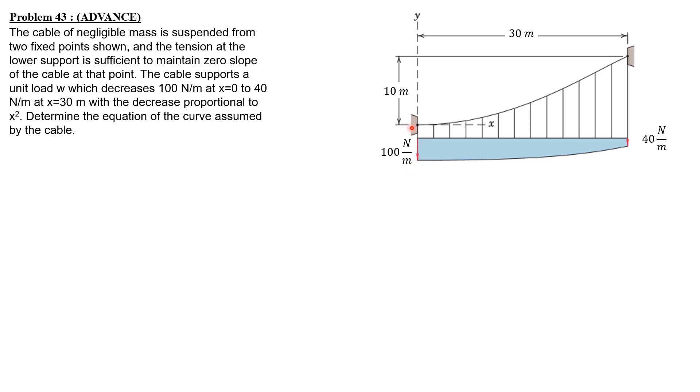The requirement is to derive or determine the equation of this curve if the loading varies from 100 to 40 N per meter at the right end, and it is assumed that the decrease is proportional to x squared. Therefore, this portion is a spandrel of parabola, and we treat it as a rectangle minus spandrel of parabola. Since the slope at the left support is zero, the tension is horizontal.